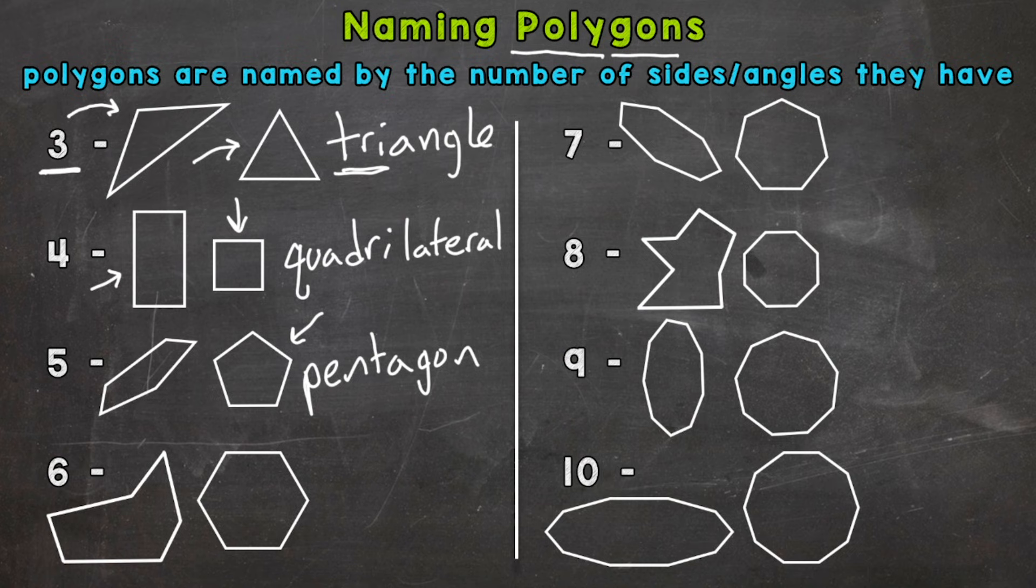Six sides and angles—we call that type of polygon a hexagon. You can remember that six has an X and hexagon has an X. So match your Xs.